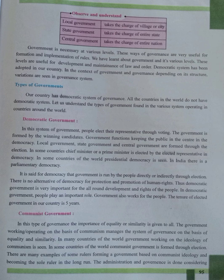Government is necessary at various levels. These ways of governance are very useful for the formation and implementation of rules. We have learnt about government and its various levels, which are useful for development and maintenance of law and order. Democratic system has been adopted in our country. In the context of government and governance, depending on its structure, variations are seen in governance systems.